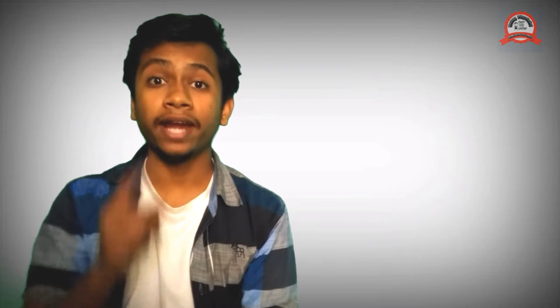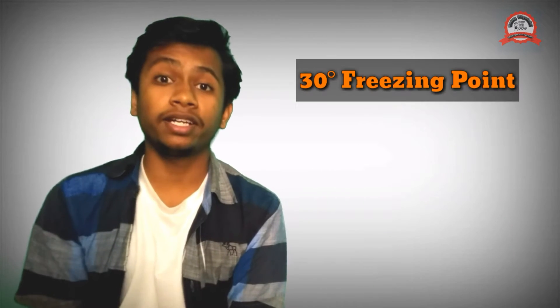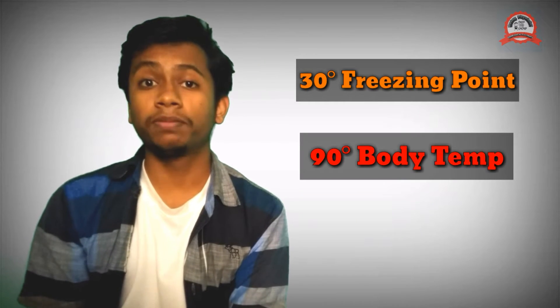Then he multiplied each value by 4 to eliminate the fractions. Maybe he didn't want the complexity of the thermometer. This meant 30 degrees as the freezing point of water and 90 degrees as the approximate body temperature.